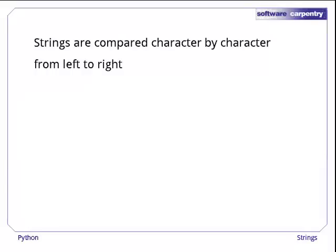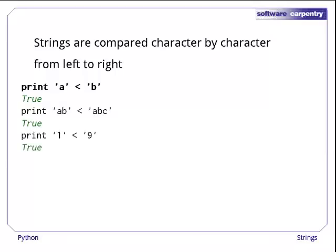And speaking of comparison, we can use less than or greater than or equal to to compare strings. When Python compares strings, it works character by character from left to right. As you'd expect, A is less than B. And AB is less than ABC, since AB runs out of characters first. The digit characters are ordered in the natural way, too. But if you put these rules together, the string 100 is less than the string 9, because 1 is less than 9.